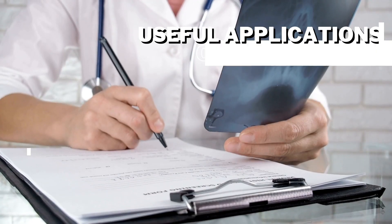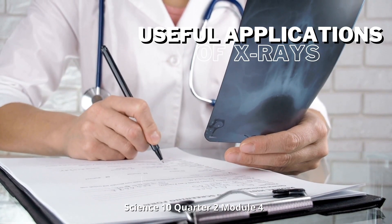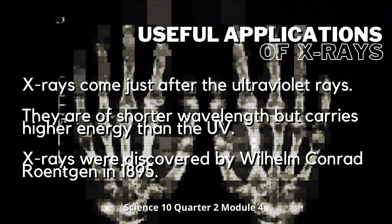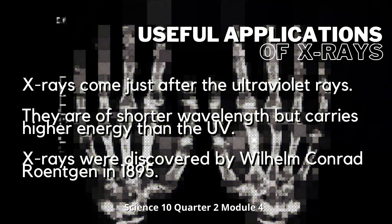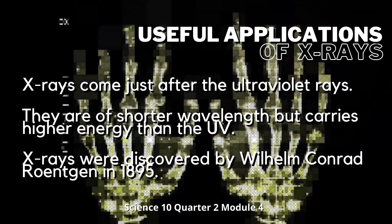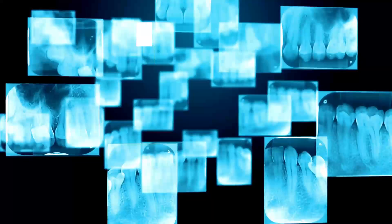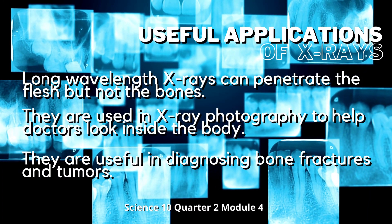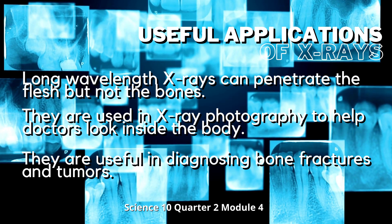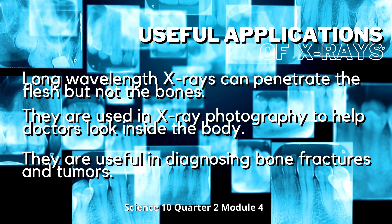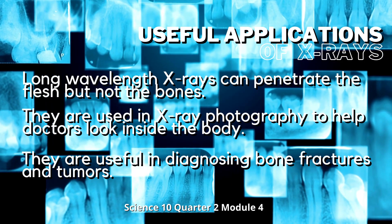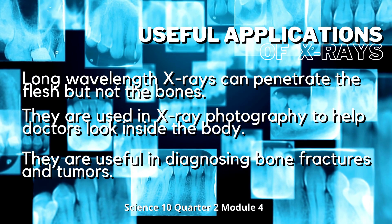The following are useful applications of X-rays. X-rays come just after ultraviolet rays; they have shorter wavelengths but carry higher energy than UV. X-rays are produced using an X-ray tube and are emitted when fast-moving electrons hit a metal target. X-rays were discovered by Wilhelm Conrad Roentgen in 1895. Long wavelength X-rays can penetrate the flesh but not the bones, and are used in X-ray photography to help doctors look inside the body. They are useful in diagnosing bone fractures and tumors.